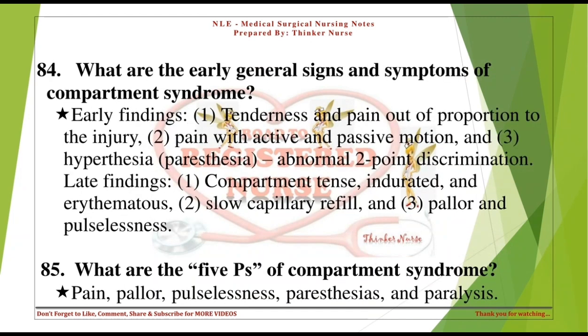What are the early general signs and symptoms of compartment syndrome? Early findings: 1) tenderness and pain out of proportion to the injury, 2) pain with active and passive motion, and 3) hyperthesia, paresthesia, and abnormal two-point discrimination. Late findings: 1) compartment tense, indurated, and erythematous, 2) slow capillary refill, and 3) pallor and pulselessness.